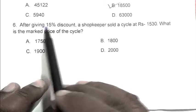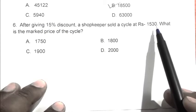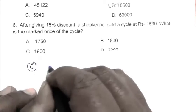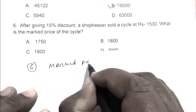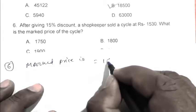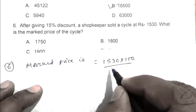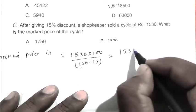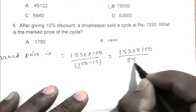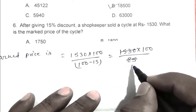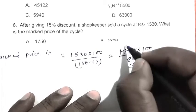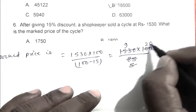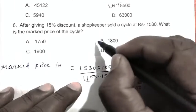Question number 6: After giving 15% discount, a shopkeeper sold a cycle at Rs. 1530. What is the marked price of the cycle? We can calculate it from the formula: marked price equals 1530 × 100 / (100 - 15). That is 1530 × 100 / 85, which equals 1800. So B is the right answer.